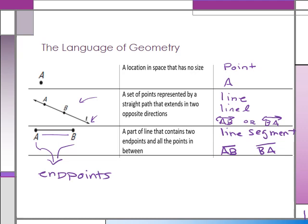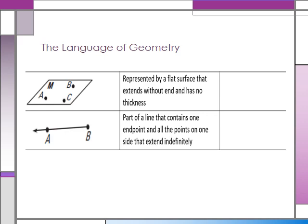Both a line and a line segment have absolutely no thickness. We also have a plane, which is represented by a flat surface that extends without end and has no thickness. We typically use a parallelogram to draw and represent a plane. We can name it by a capital letter, such as plane M.